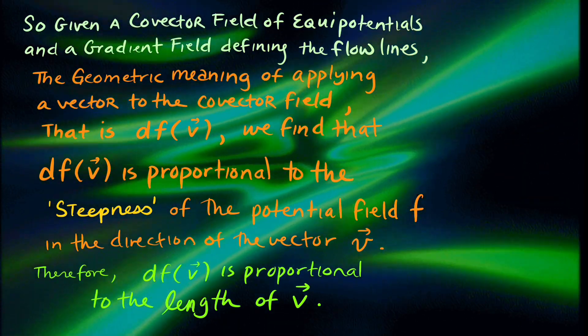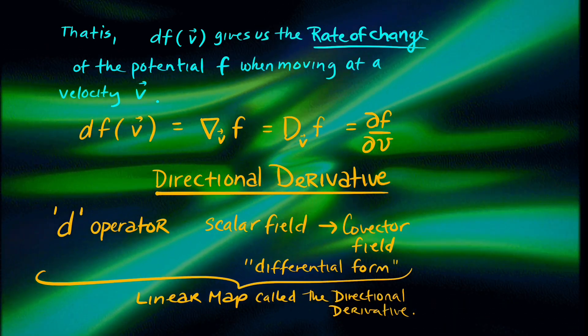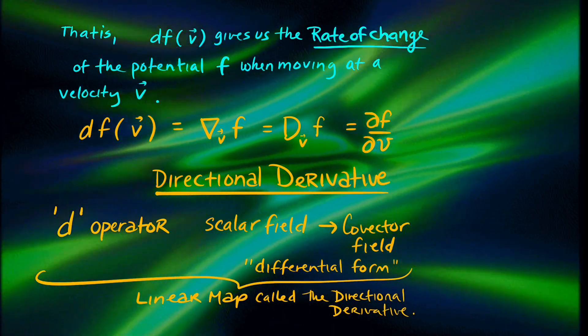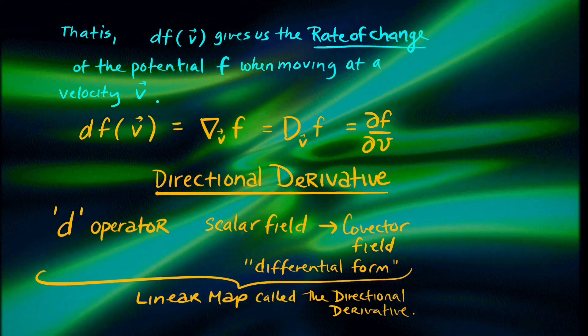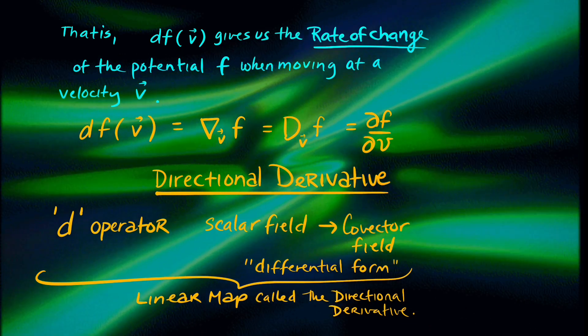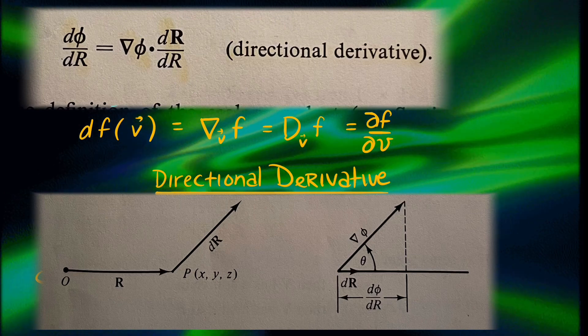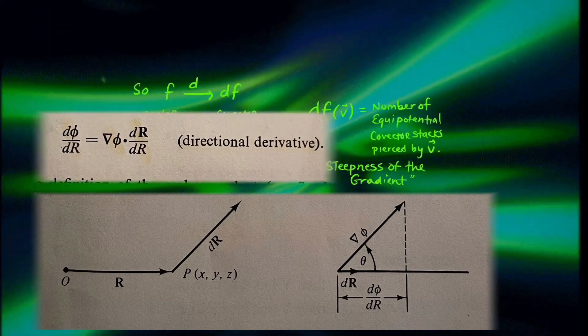This gives us a way of measuring the magnitude of a vector field. For vectors, we have to define this thing called the directional derivative, which is essentially applying a covector field to the tangent vector v. This directional derivative gives us a sense of a differential of a potential scalar function.